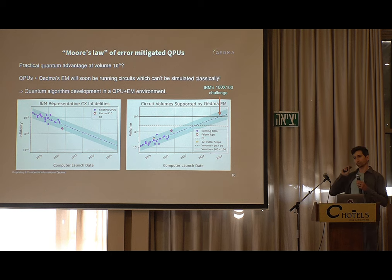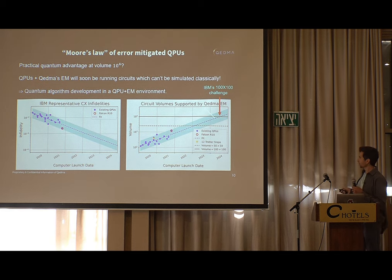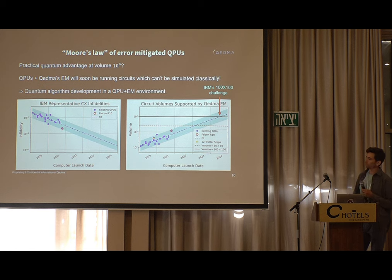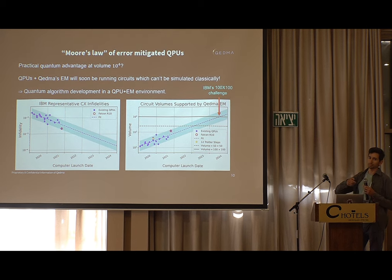If you want to run a circuit with no errors and extract the output, at that point you would have to abandon your favorite state vector simulator, tensor network, or whatever. The best option, we believe, would be a good quantum processor and good error mitigation software — together, these give you ideal outputs. You need the unbiased guarantee; otherwise it's hard to know what to do with the results.